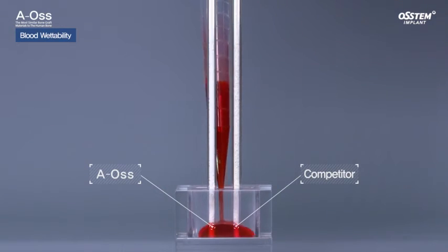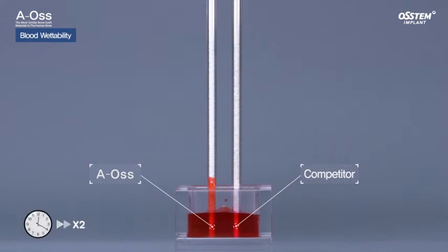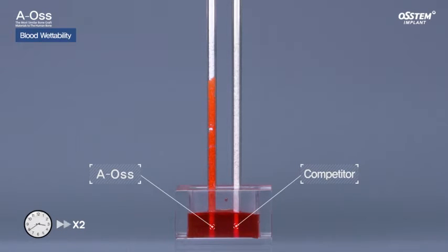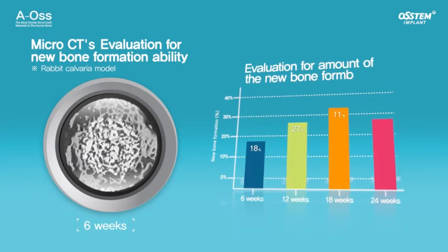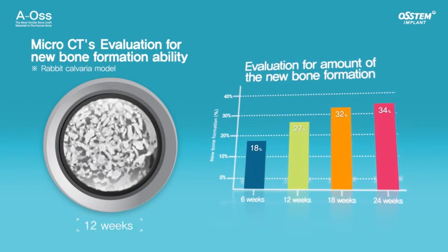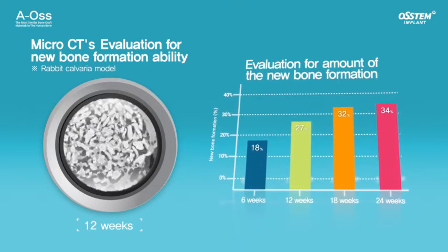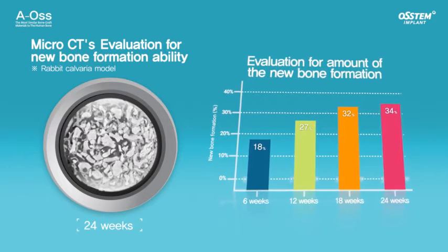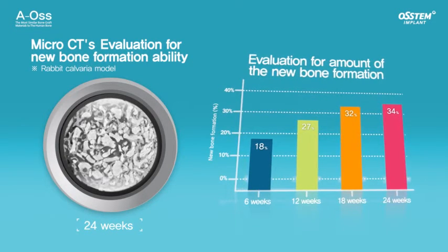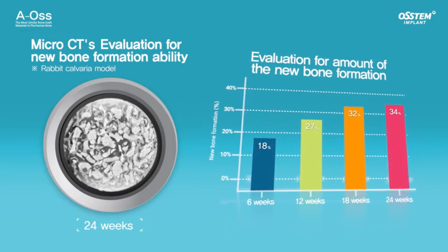The high porosity and large surface area of Aeos maximizes the area of contact with body fluids, which creates sufficient space for full blood soaking. Aeos is an excellent hydrophilic element for blood, providing the space required to combine and preserve nutrients and effective factors in the blood, thereby providing an environment in which new bone can be formed.